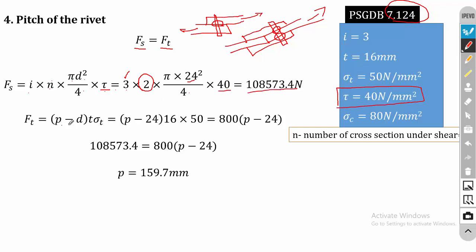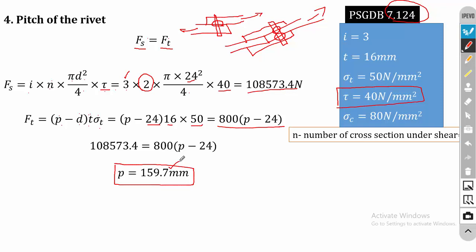Ft = (p − d) × t × sigma_t. Here p is the pitch to be calculated, d = 24 mm, t = 16 mm, and sigma_t = 50 N/mm². Substituting gives Ft = 800(p − 24). Equating Fs with Ft and solving, the calculated pitch value is 159.7 mm.